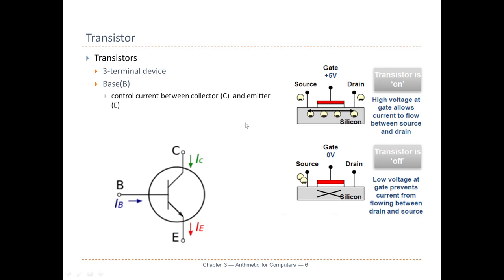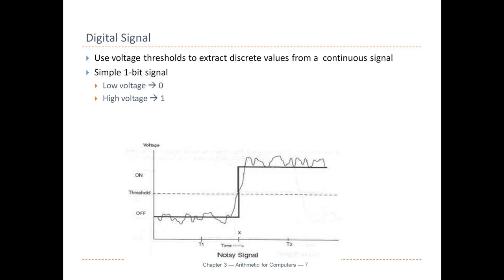If they're in an off state, the voltage of the source will remain the same. While it's in the on case, the voltage of the source will be dragged down to be the same voltage as the drain. So this is how basically one signal would control the other signal. As we all know, computers are represented in binaries — zero and one. So by convention, we will use low voltage to represent binary number zero.